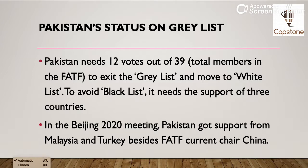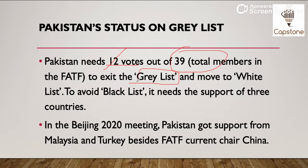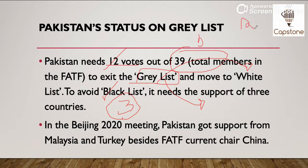On the other hand, agar Pakistan ka status grey list mein hai, toh kaise aata hai aur kya voting hoti hai? Pakistan ko 12 votes chahiye — kyunki total 39 countries hain — agar 12 countries ne Pakistan ko support kar diya, toh Pakistan grey list se bahar aakar white list mein aa jayega. Agar Pakistan ko 3 countries ne bhi support nahi kiya, toh woh grey list se black list mein move ho jayega. 3 se zyada countries aur 12 se kam countries mein agar woh rahe, then they will be maintained in the grey list, aur grey list ka matlab hai ki unhe warning di jayegi ki terror financing aur money laundering jaisi kamon ko band karein, aur agar black list mein aa gaye toh inke saare finances band ho jayenge.